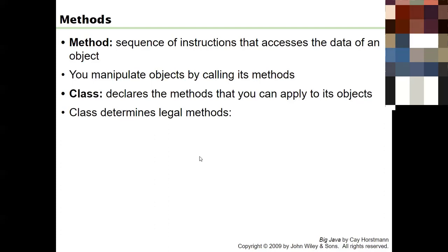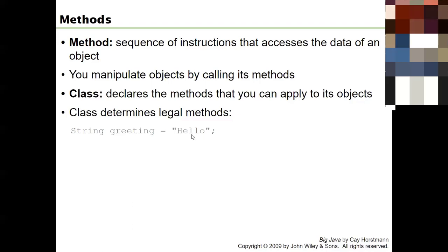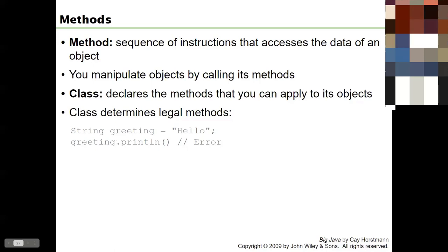It's the class that determines the legal methods for an object. We get a lot of compiler errors like 'you wrote this method name on this object but there's no method called that.' For example: String greeting = "Hello" - if you say greeting.println, that's a problem because greeting is a String, and Strings don't have a println method. Only PrintStreams have println.